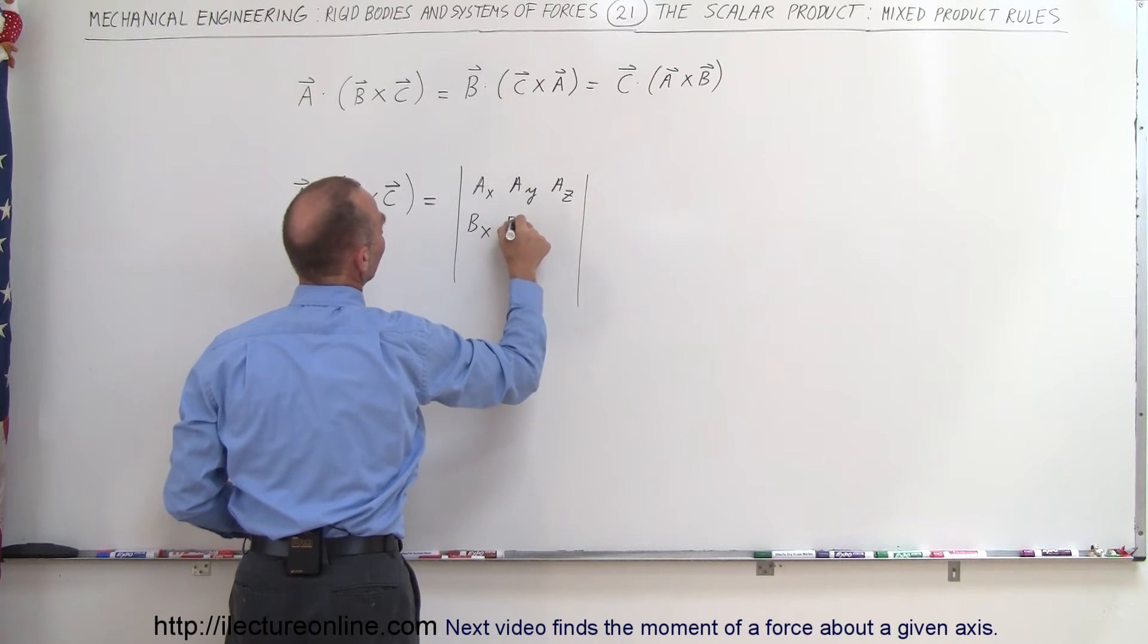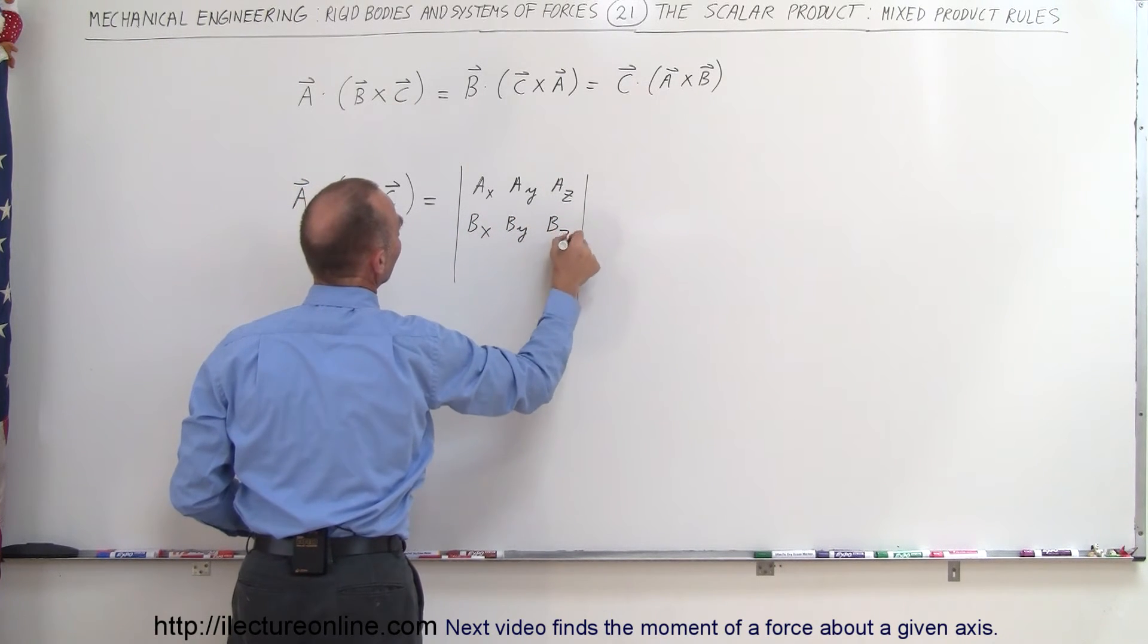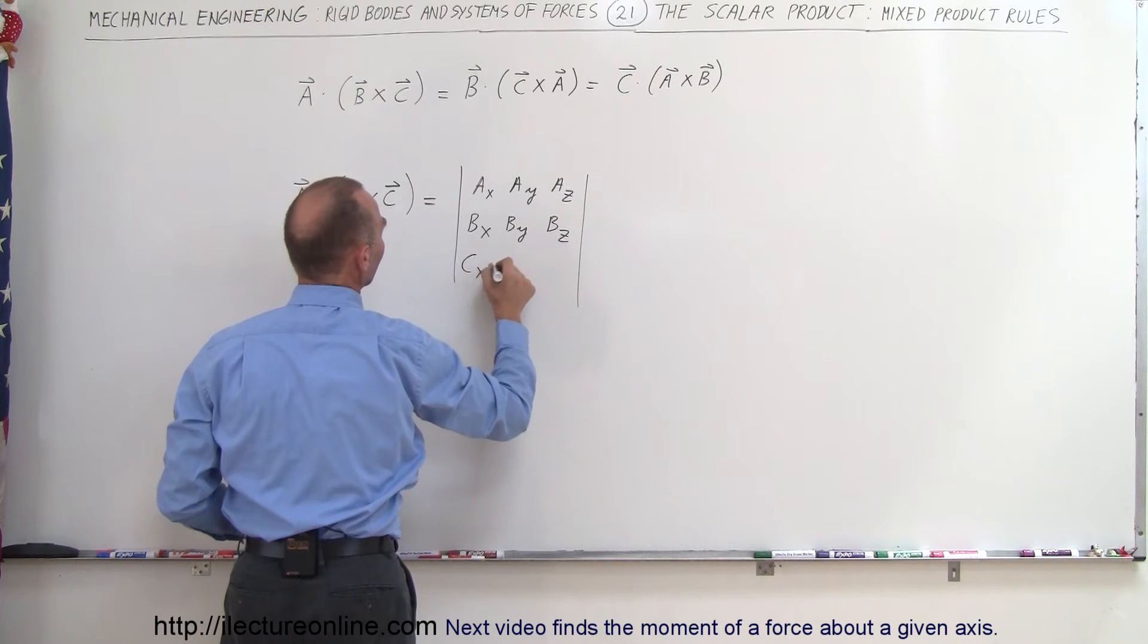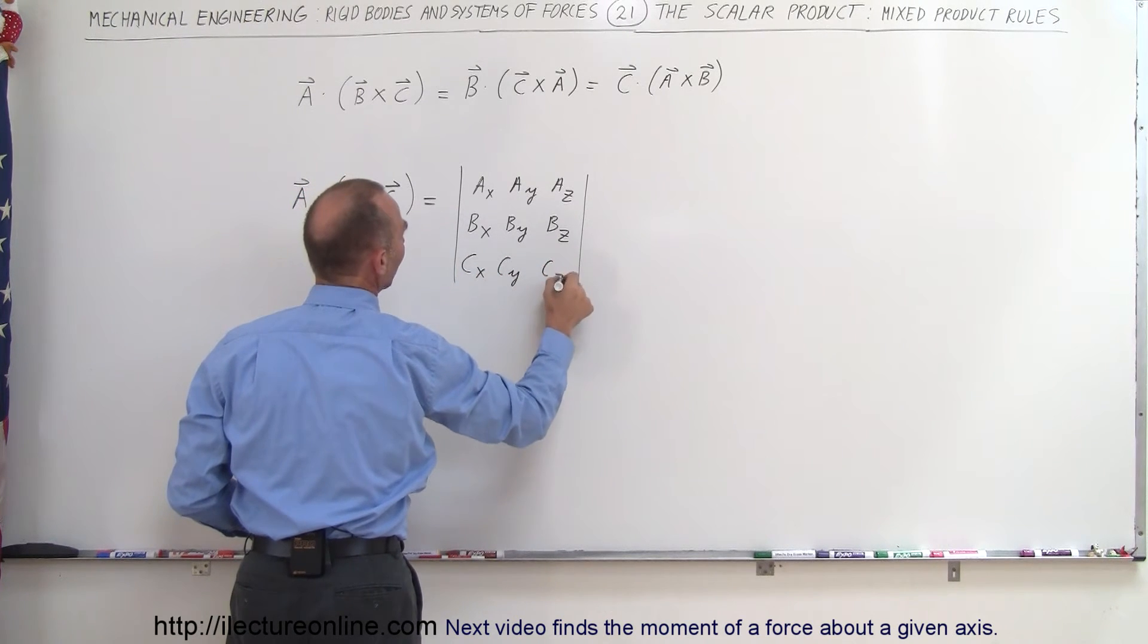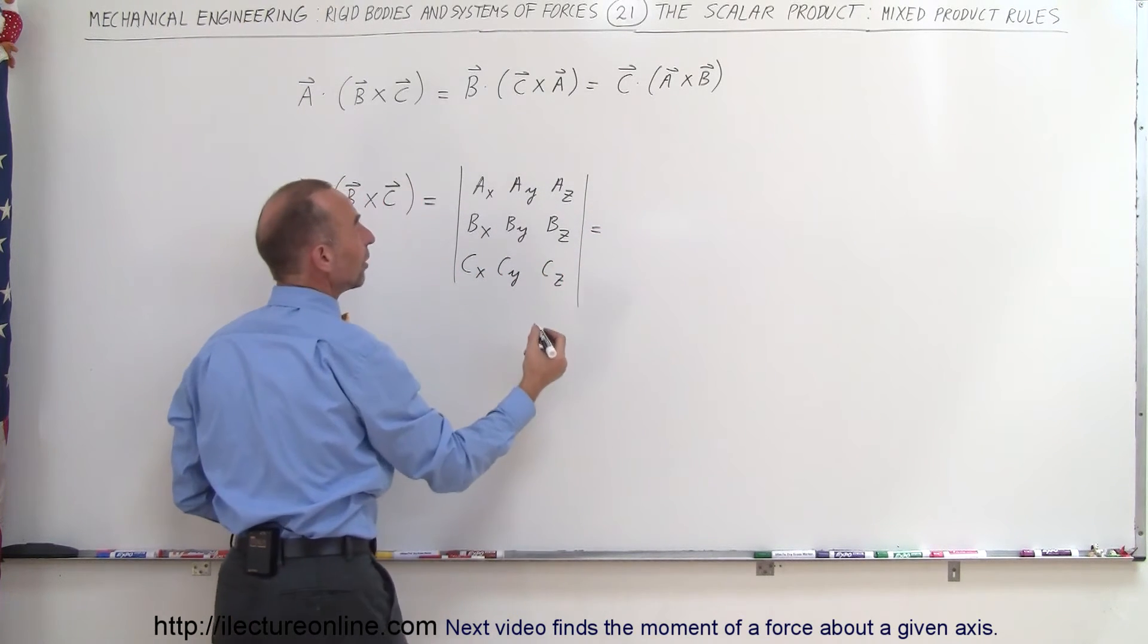B sub X, B sub Y, B sub Z and C sub X, C sub Y and C sub Z. And if you work this out, you get the following.